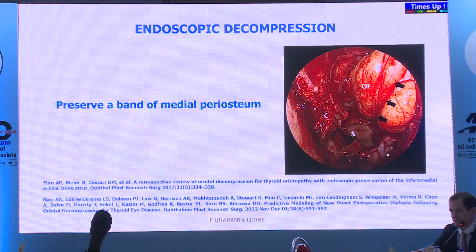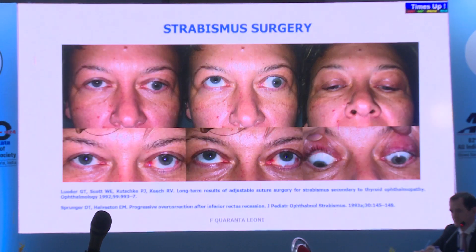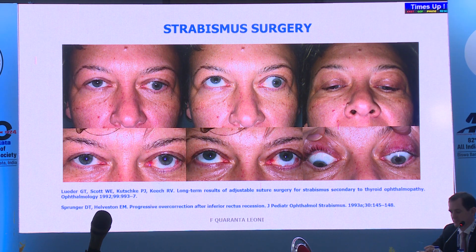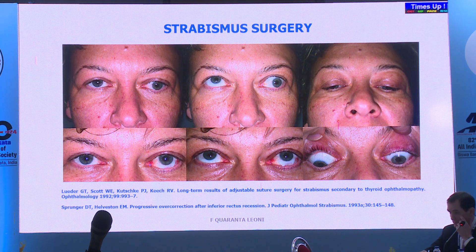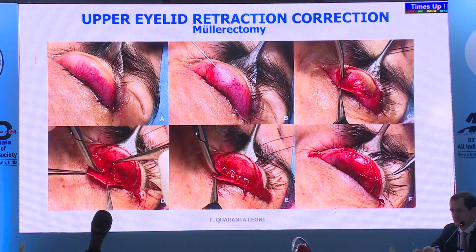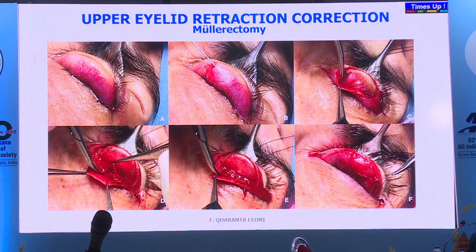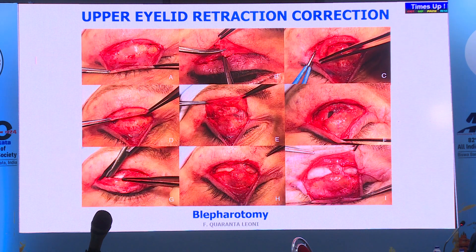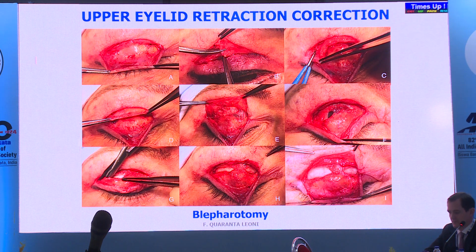Previously, overcorrecting with very large inferior rectus recessions led to late overcorrection. Now, using the intraoperative relaxed muscle positioning technique, inferior rectus is recessed no more than 4 to 5 millimeters—sufficient. Upper lid surgery is best under local anesthesia: mullerectomy up to 2mm of retraction, blepharotomy for 3 to 4mm retraction, which is very standardized.